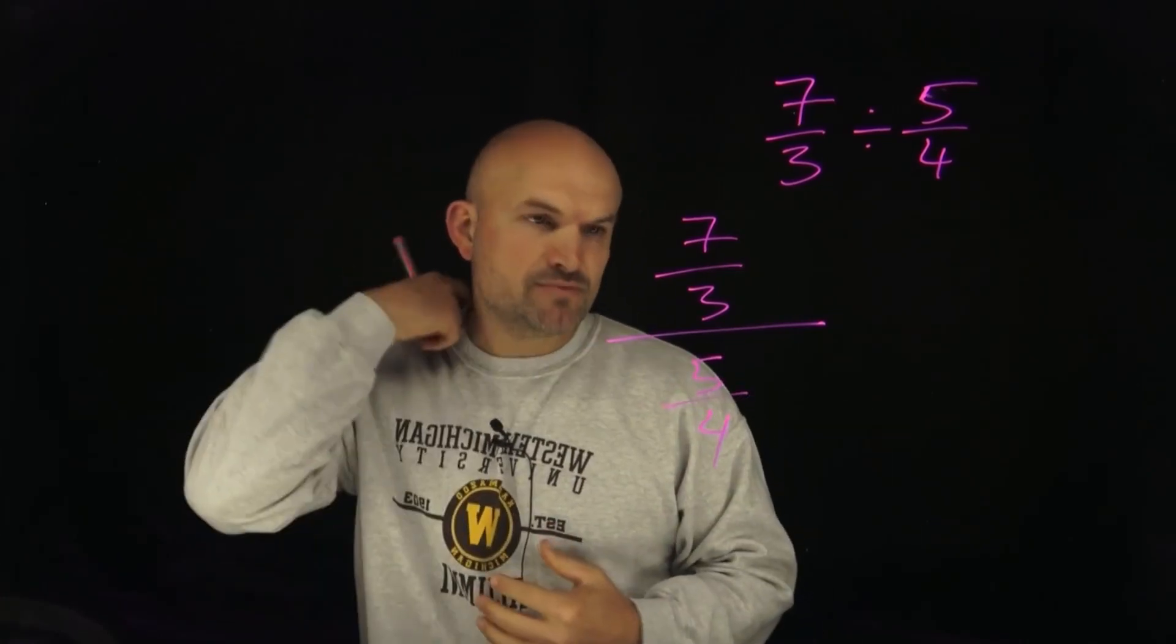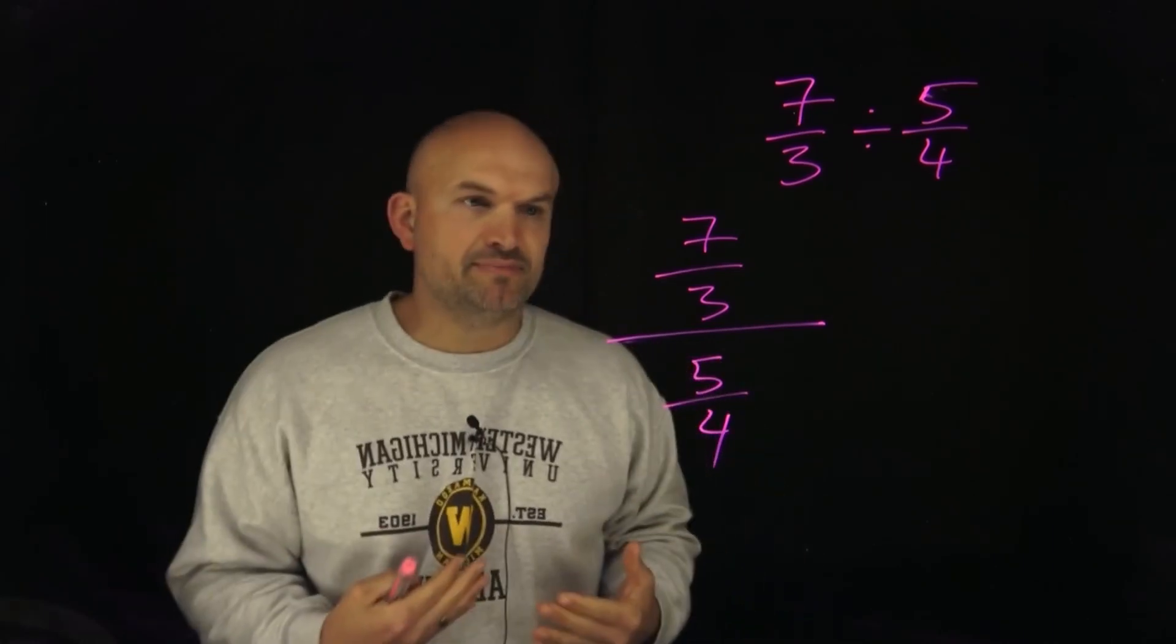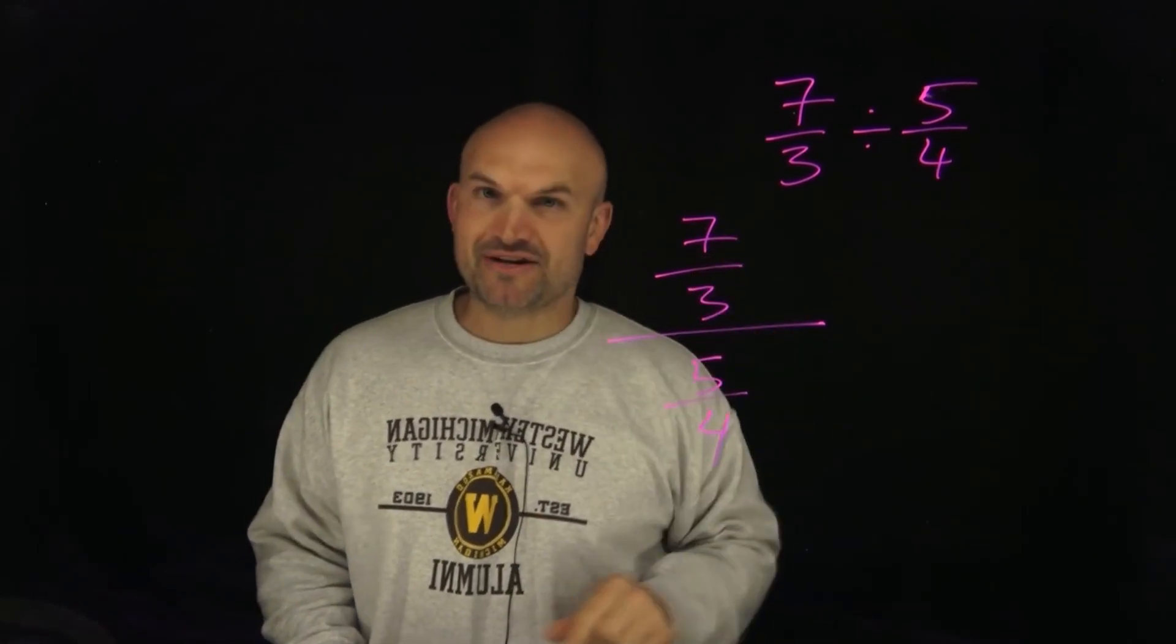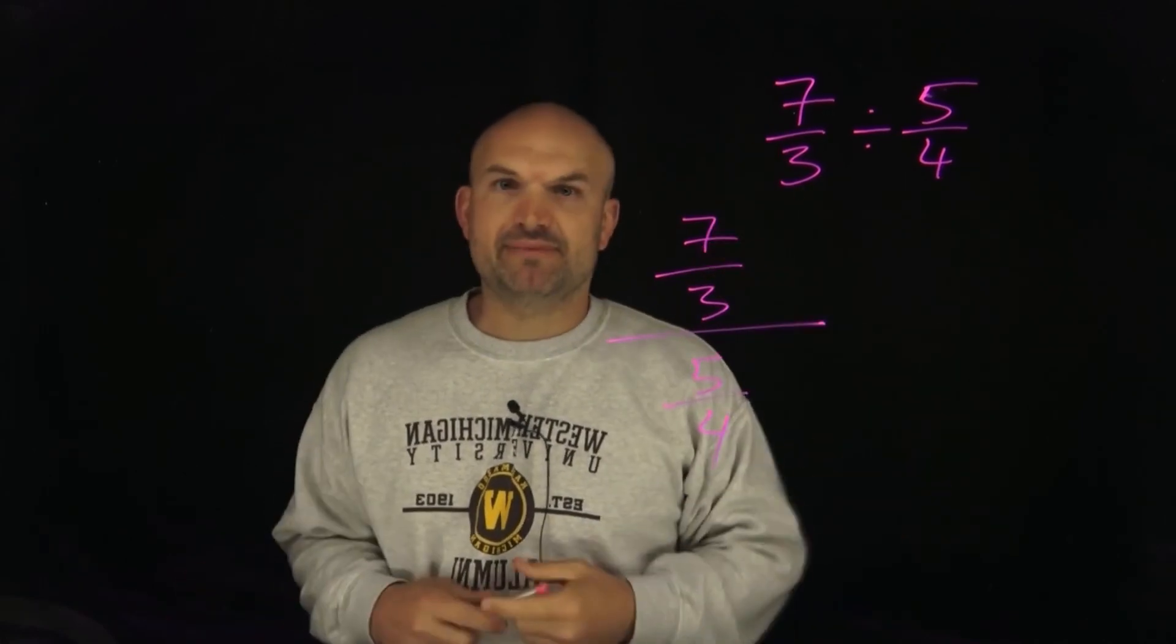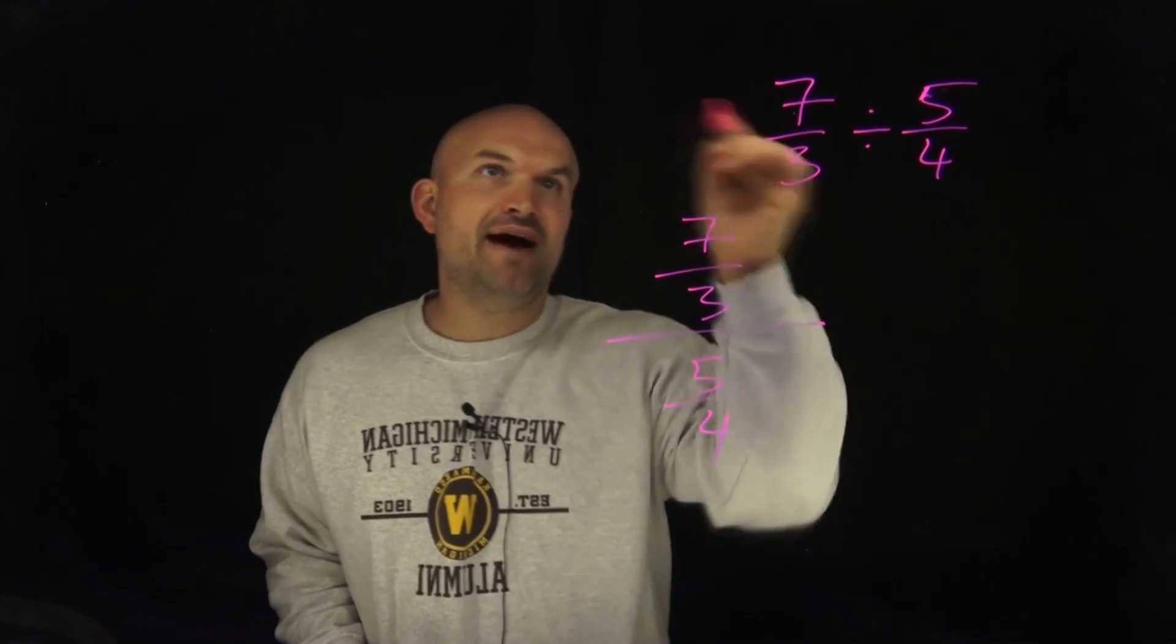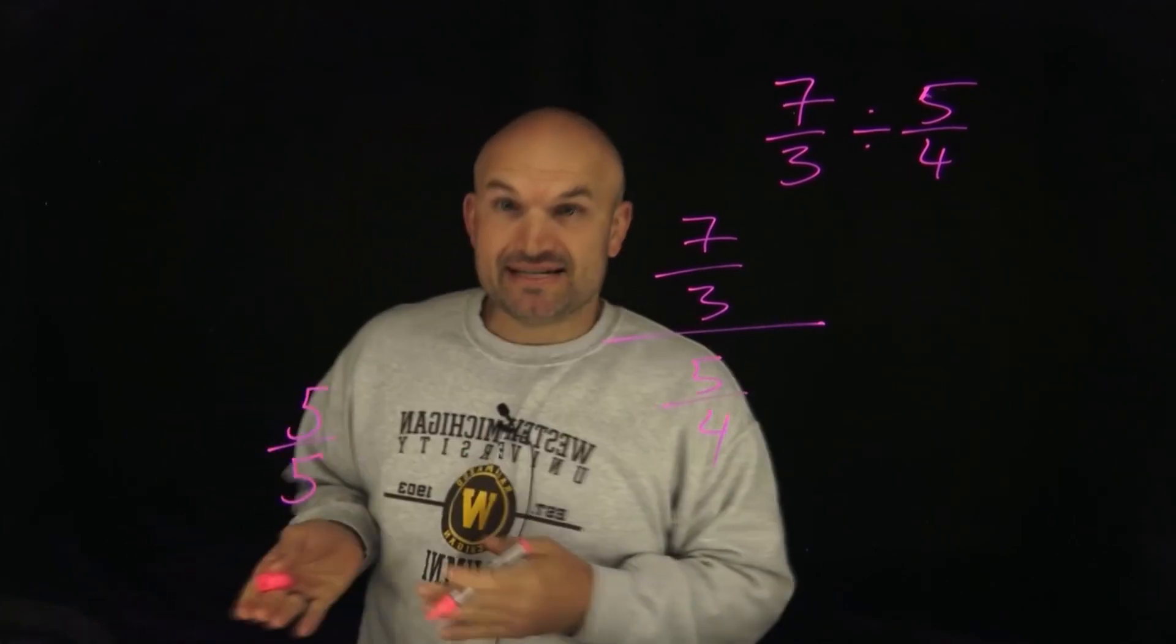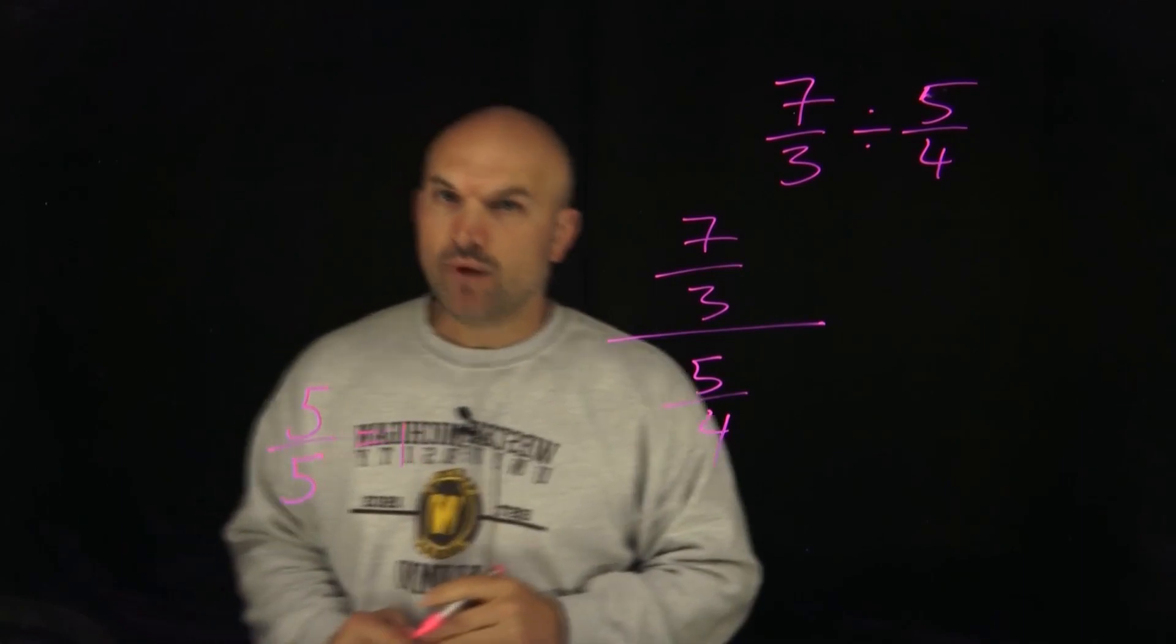The one thing I want you to think about is when we're trying to simplify fractions, what we want to have is we don't want to have something divided by something else. In this case, you can see we have this fraction being divided by this fraction. And typically we want either just one fraction bar or we want something to be an integer. There's something important that I want you to kind of realize here. If I had, let's say, a 5 divided by 5, like that's kind of nice because what do we know about 5 divided by 5? Well, that's just equal to a 1.